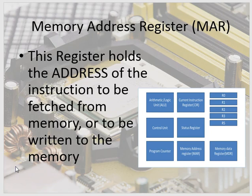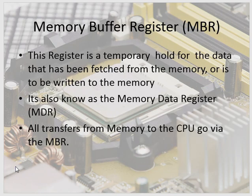The memory address register holds the address of the instruction to be fetched from memory or to be written to memory. The memory buffer register is a temporary hold for data that has been fetched from memory or is to be written to memory. It is also known as the memory data register, or MDR. All transfers from memory to the CPU go via the MBR — that's a very important point.